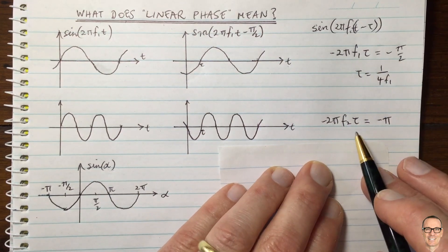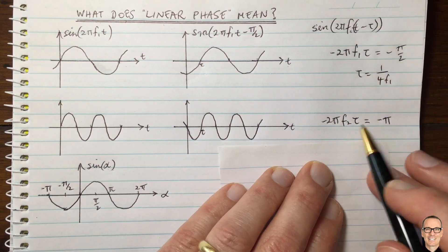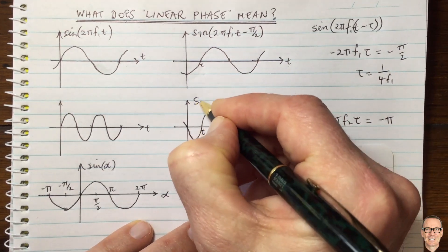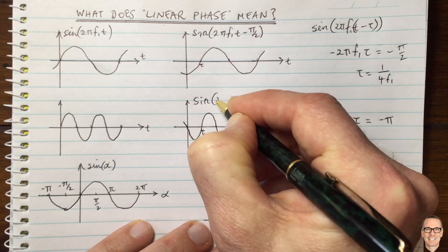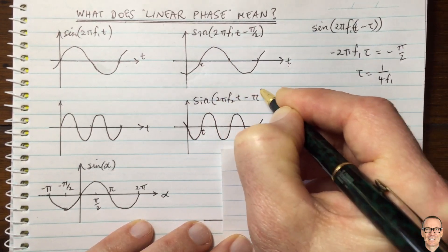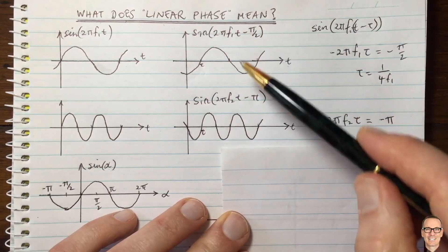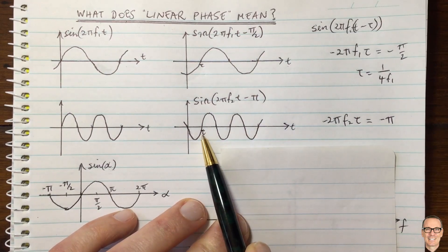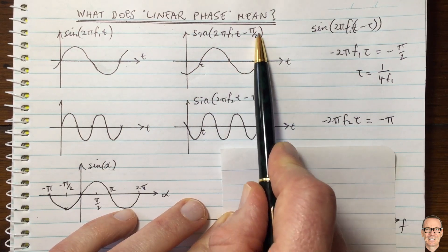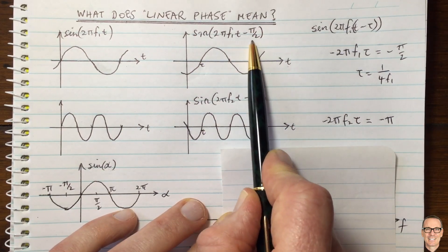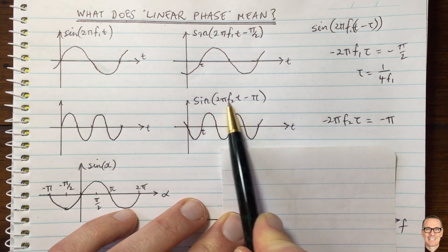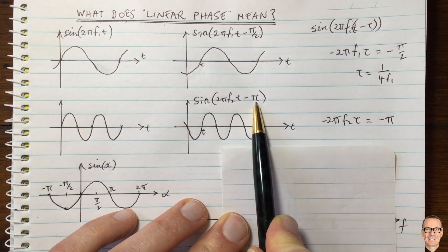So for the same value of TOR, that's the important thing. So now for the same value of TOR, we now have this function here, sine, because the frequency is different, 2 pi f2t minus pi. Okay, now we can see for the same value of TOR, the same delay, this function at that frequency was delayed in phase by minus pi on two. But this function at this frequency was delayed in phase by pi.